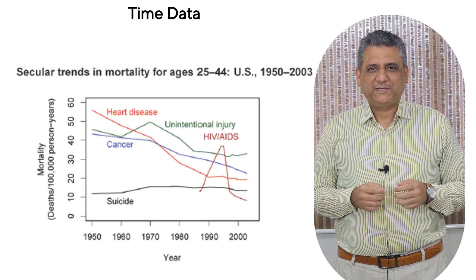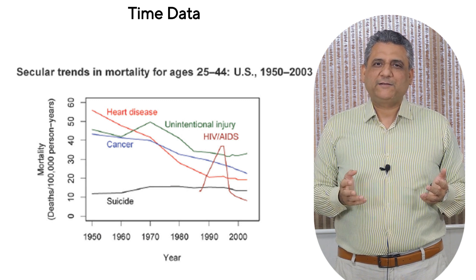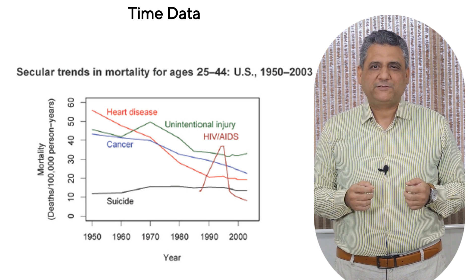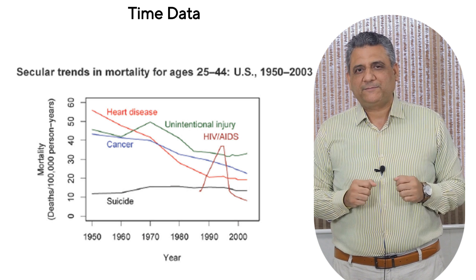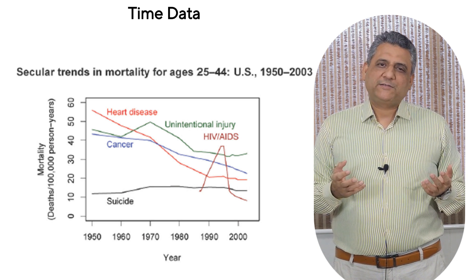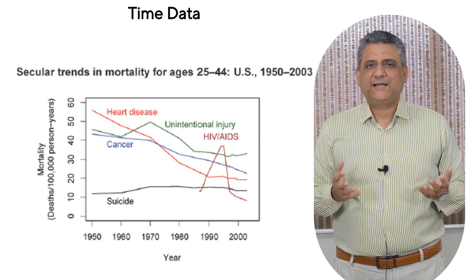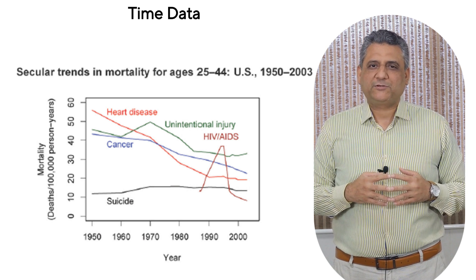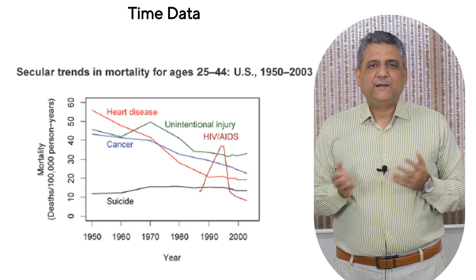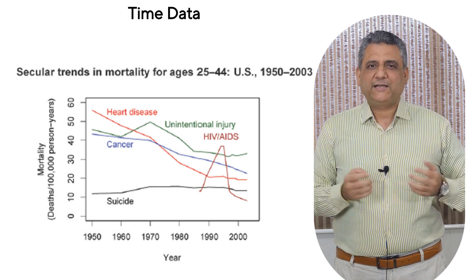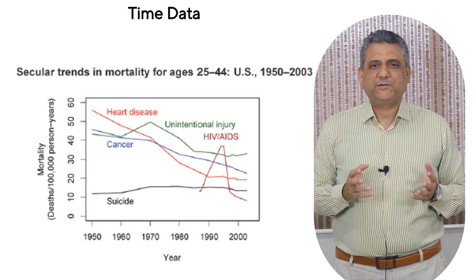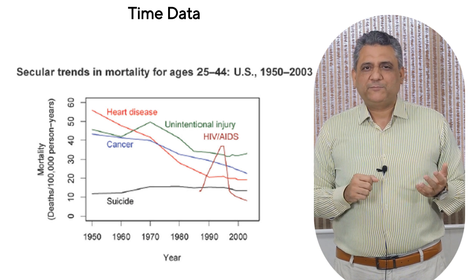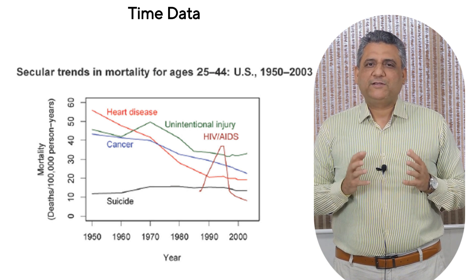Here is an example. We're looking at secular trends in mortality among adults aged 25 to 44 in the US from 1950 to 2003. What's powerful about this graph is not just the data — it's the dimension of time. When we study diseases over decades, time allows us to see how population health evolves, how new risks emerge, how interventions work, and how societies change. Notice the steady decline in heart disease deaths, something we wouldn't appreciate from a single-year snapshot. How does seeing this long-term trend help us understand the impact of prevention, treatment, and lifestyle changes over generations?